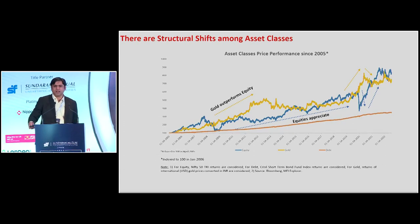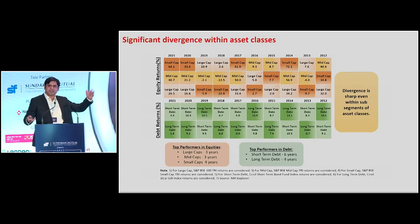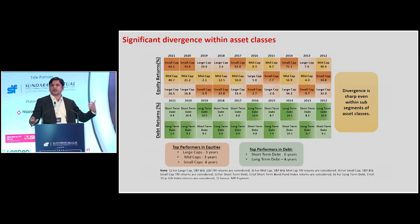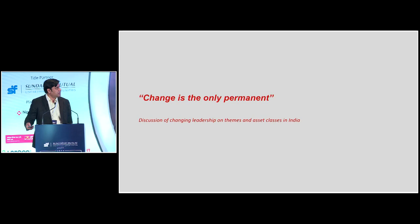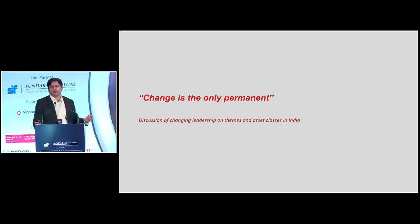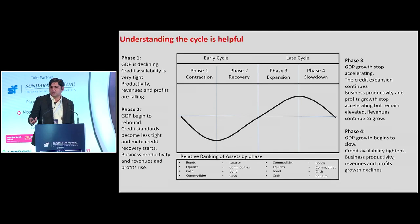This is under everyone's knowledge, and as advisors, as asset allocators, this is what we try to do — to handhold our clients, to navigate these ups and downs, changing leadership in asset class and sub-asset class through our experience, wisdom, and so on. What we have seen so far is that the only permanent thing is change, and the leadership keeps changing. People try to navigate these changes primarily through two methods.